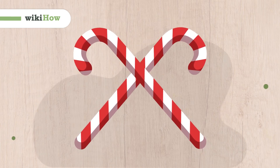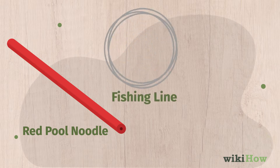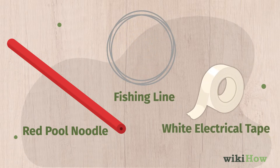To make a giant foam candy cane, you'll just need a red pool noodle, fishing line, and white electrical tape.